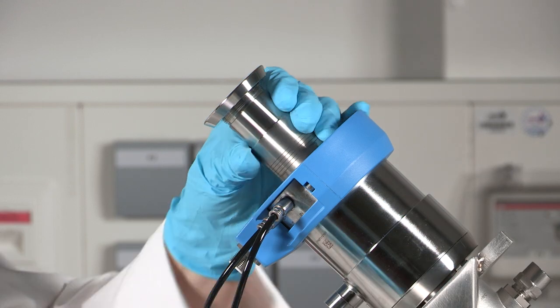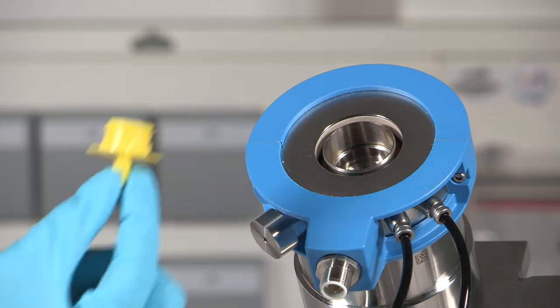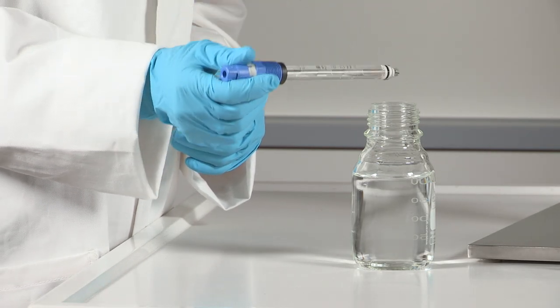Unscrew the retraction pipe. Remove the yellow protection cap. Shortly immerse the sensor shaft in water for easier installation.